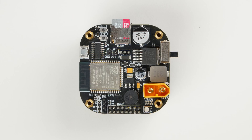When we connect the PCB to the PC, it receives 5V power from both the USB terminal and the 5V voltage regulator. A circuit, which includes a transistor, a diode and a resistor, manages the selection between these two power sources.